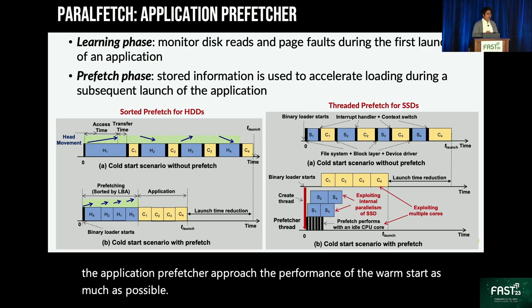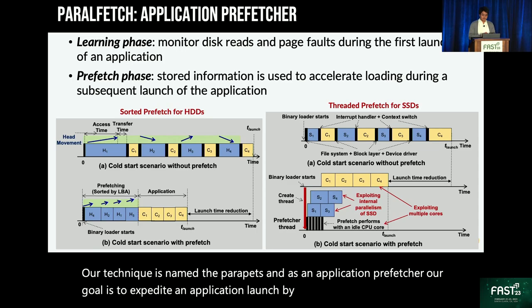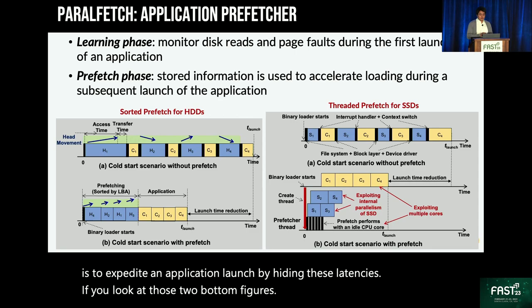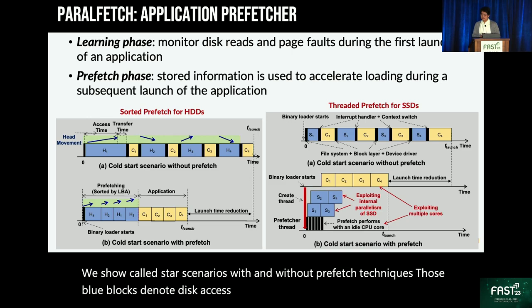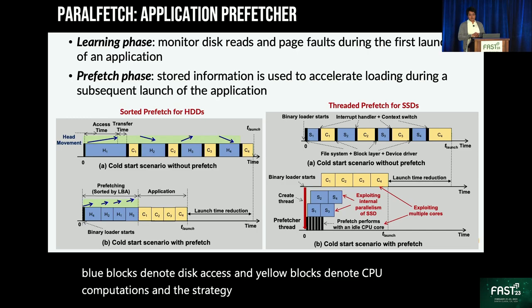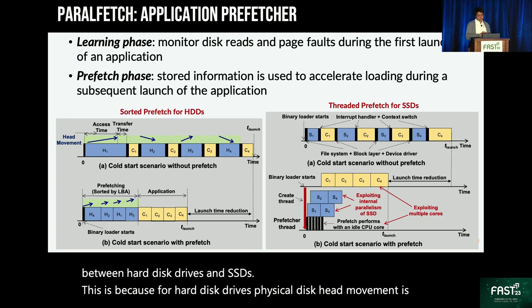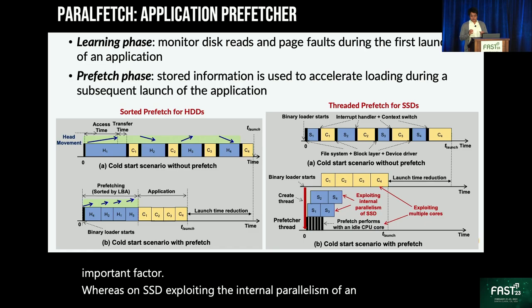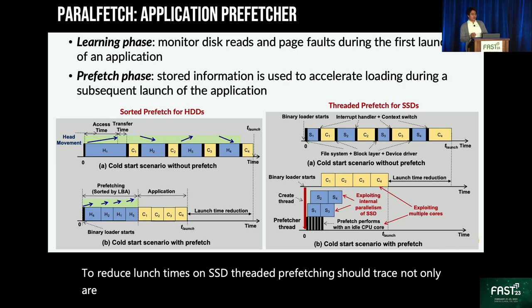Our technique is named ParaFetch. As an application prefetcher, our goal is to expedite application launch by hiding disk IO latencies. Looking at the two bottom figures, we show cold start scenarios with and without prefetch techniques — blue blocks denote disk access, yellow blocks denote CPU computations. The strategy of prefetching techniques should differ between hard disk drives and SSDs. For hard disk drives, physical disk head movement is an important factor, whereas on SSDs, exploiting internal parallelism and utilizing multiple CPU cores are more important. To reduce launch times on SSDs, threaded prefetching should trace not only IO blocks but also their access order, because there is dependency between disk access and CPU computations.